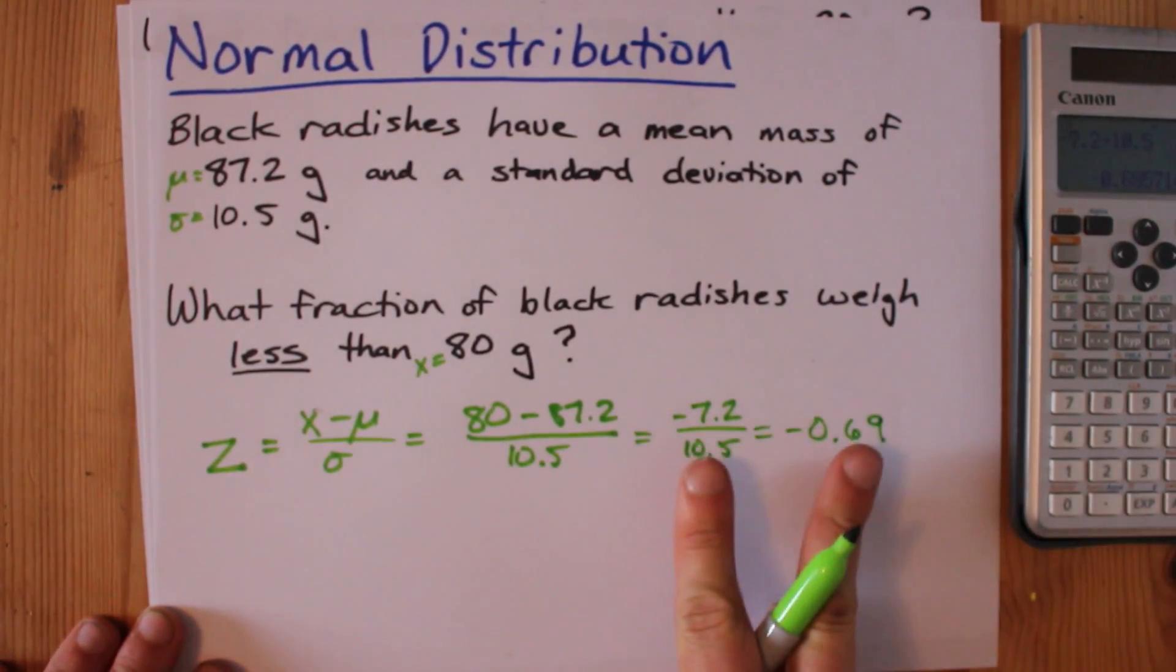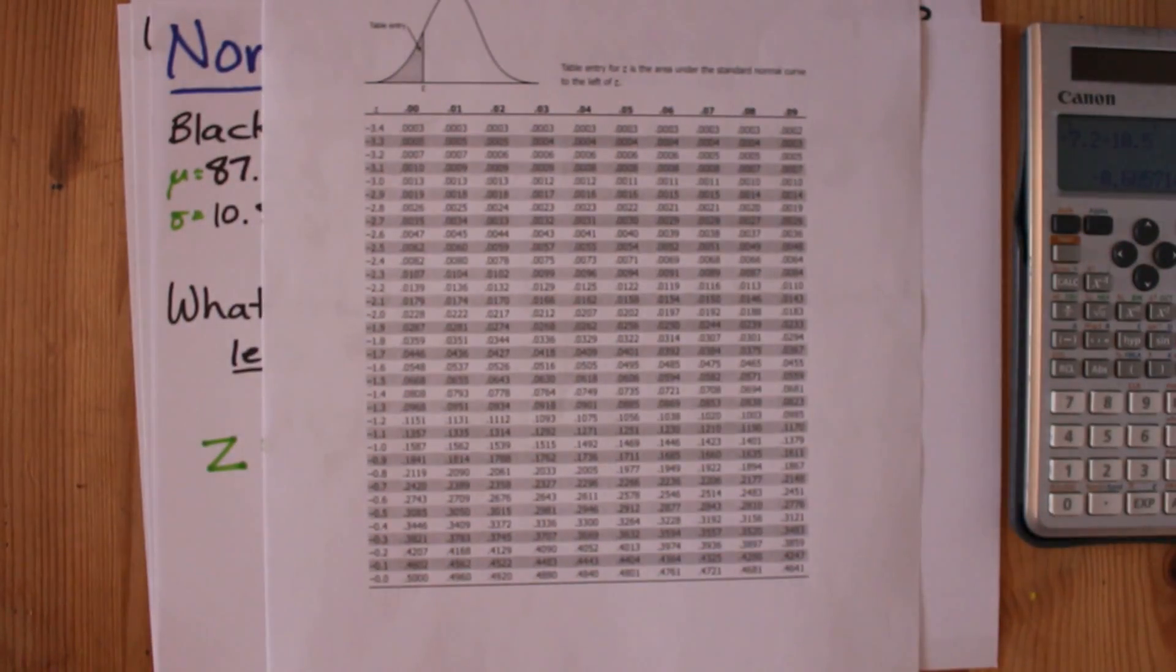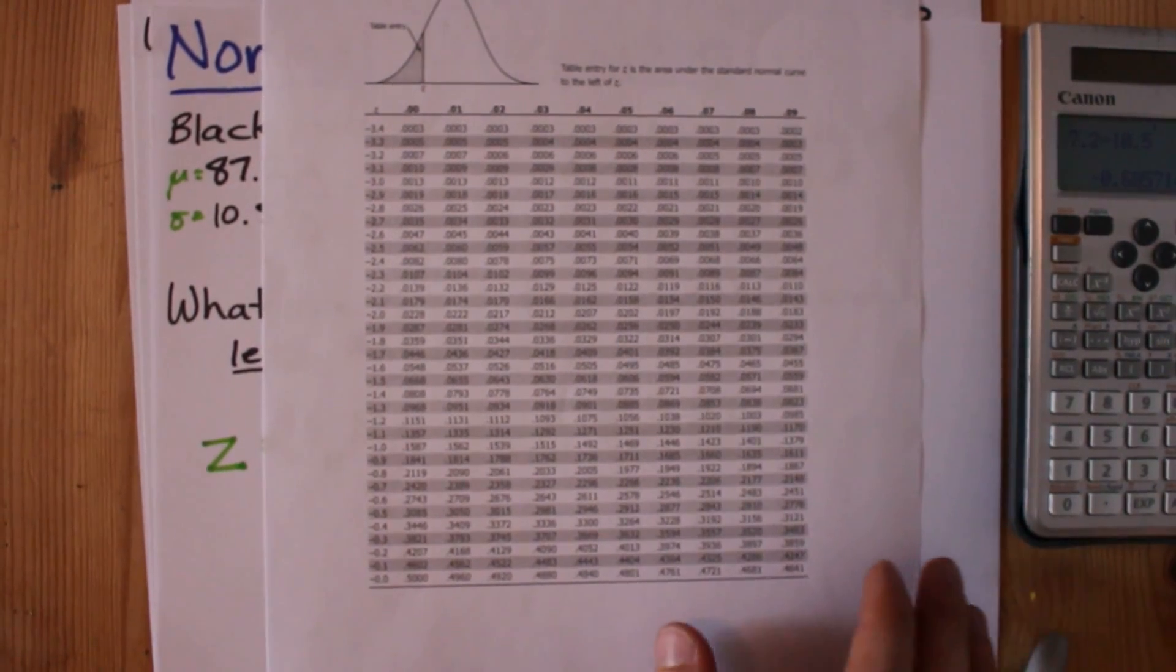I always round my z-scores to two decimal places because the z-scores in the z-score table are always to two decimal places.